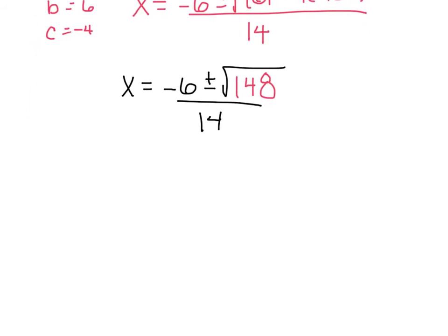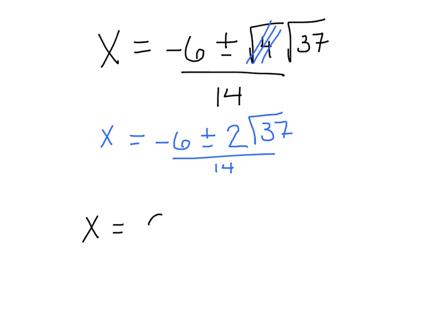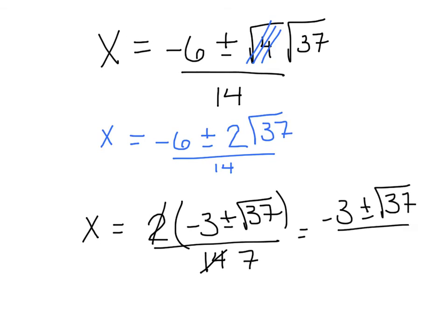Now, I do have to take my time on this one because it said simplest radical form. I need to break this down here. And I'm looking for somebody that's a perfect square and somebody that's not. I'm going to go with 4 times 37. And remember, if you get stuck, just take this number and start dividing by perfect squares until you get something that works. So, I get X equals negative 6 plus or minus. The 4 turns into the number 2 radical 37 all over 14. And it does say simplest form, so I should be able to pull out a nice GCF at this point. I can pull out a 2, and I'm left with negative 3 plus or minus radical 37 all over 14. And I can reduce this 2 and 14 to a 7. So, there we have it. We have two answers, negative 3 plus radical 37 over 7, and negative 3 minus radical 37 over 7.